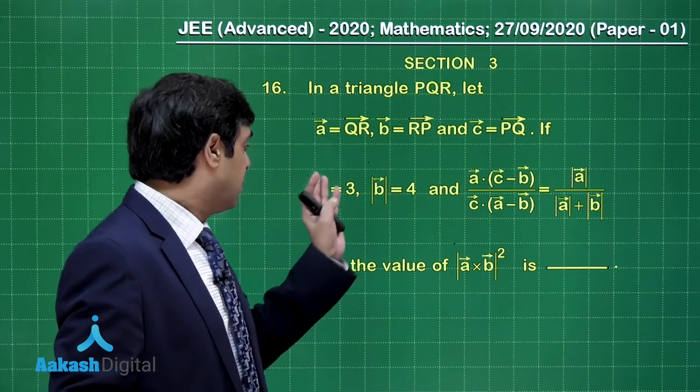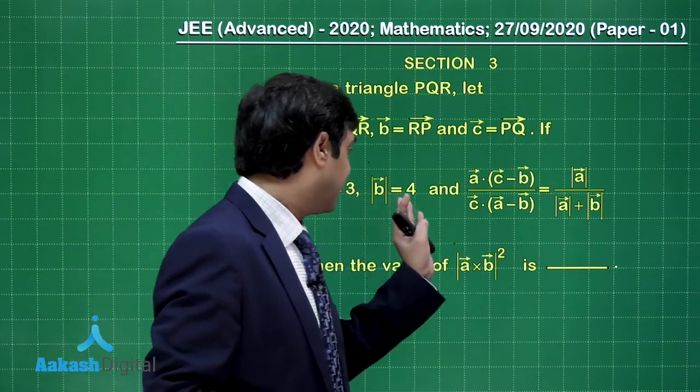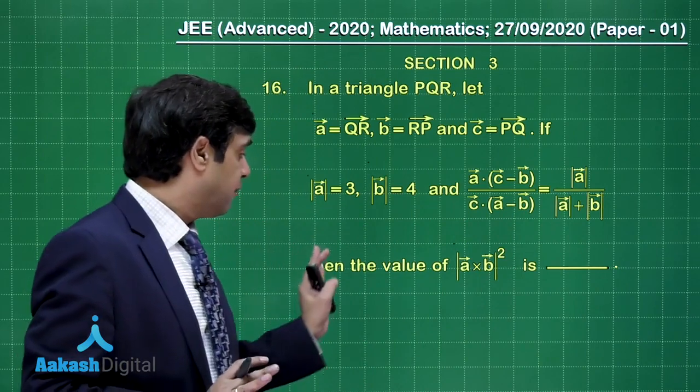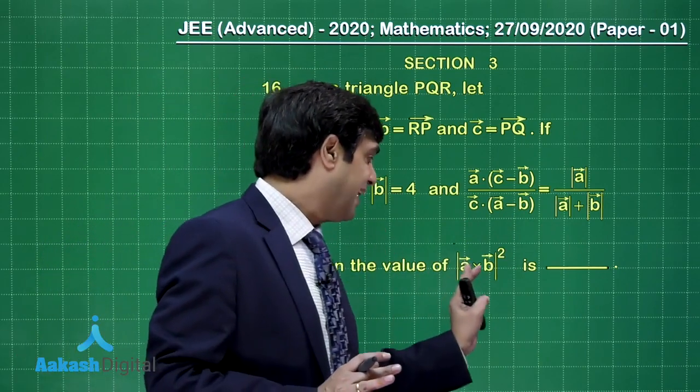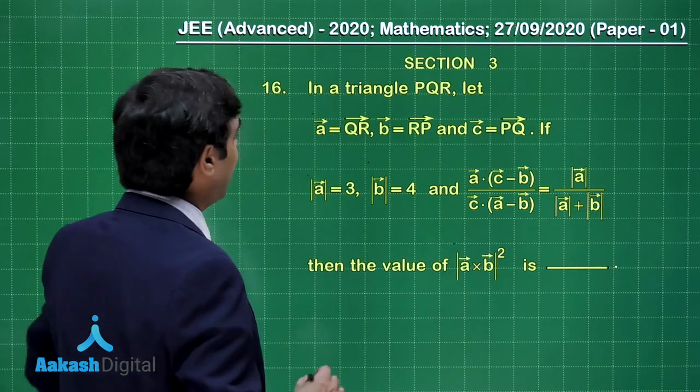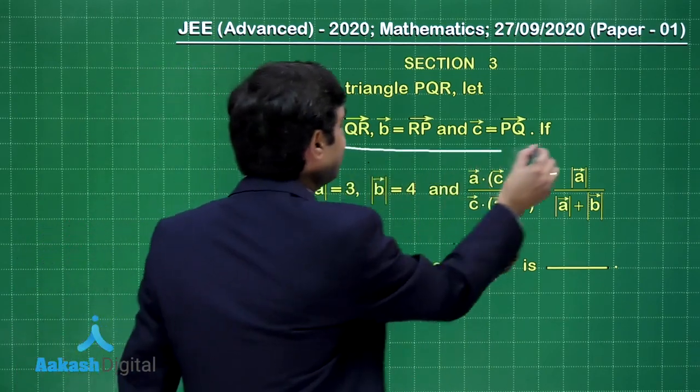If modulus of A is 3, modulus of B vector is 4, and this equation is given as true, then the value of modulus of A cross B whole square is what we are looking for. So let's understand, we can plan this question by considering this result.